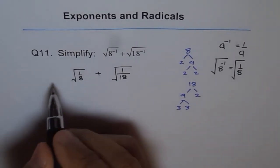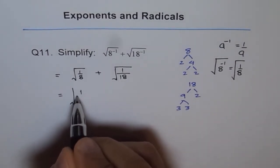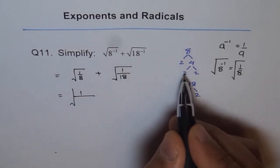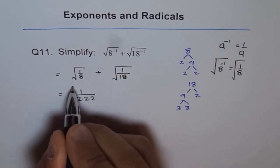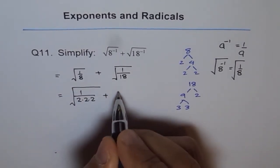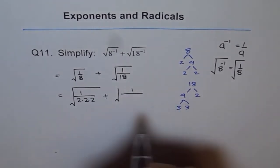That helps to write down the square root. So we can write this as square root of 1 over 8 is 2 times 2 times 2. And 18 is 1 over 3 times 3 times 2.